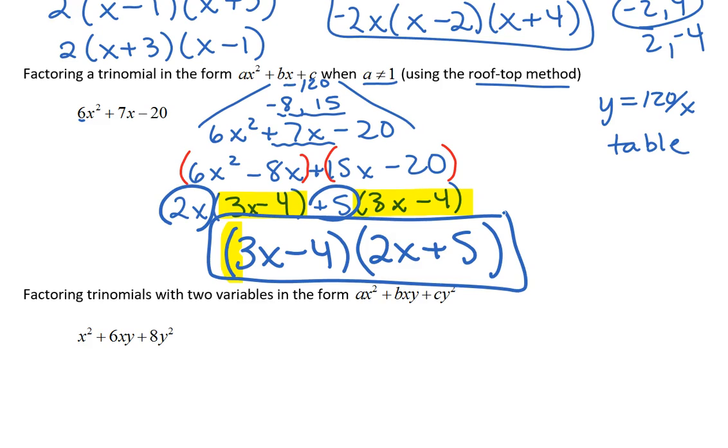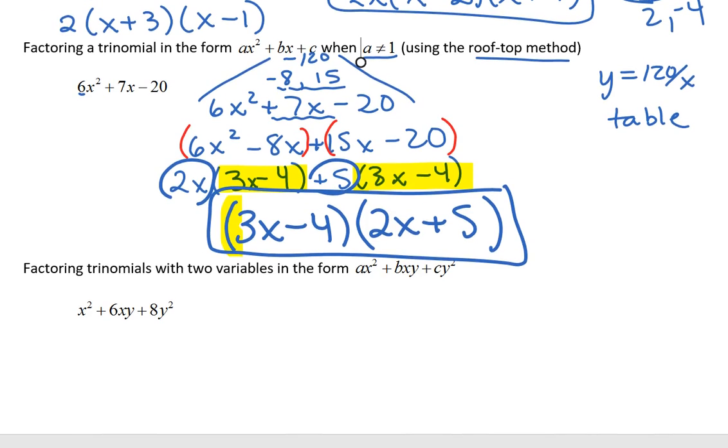The very last one I put on here is one where you have more than one variable. You have an x² and a y². The difference with these is you're not just going to have an x in front. In order to get that y² for your last term, you're going to have a y in back. Everything else is the same. We want factors that multiply to give us positive 8 and add to give us positive 6. So that's going to be a positive 2 and a positive 4. And that's it. There's your review.